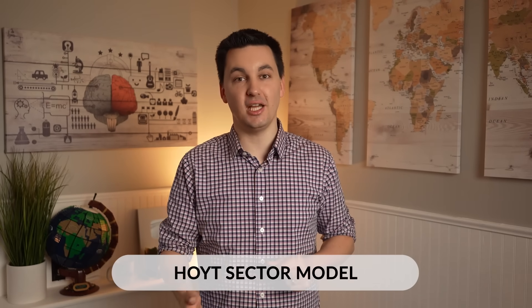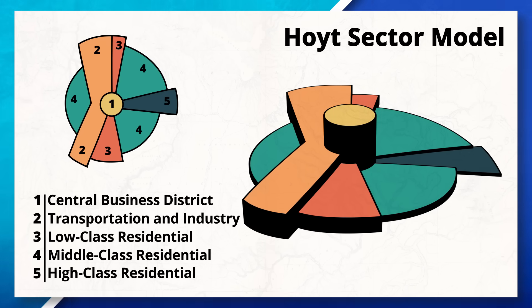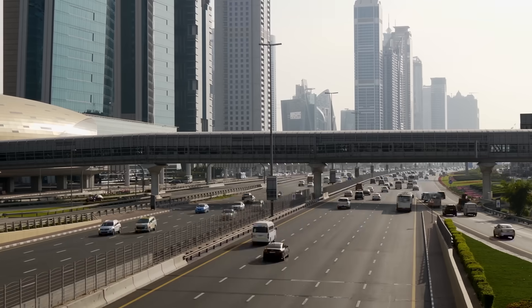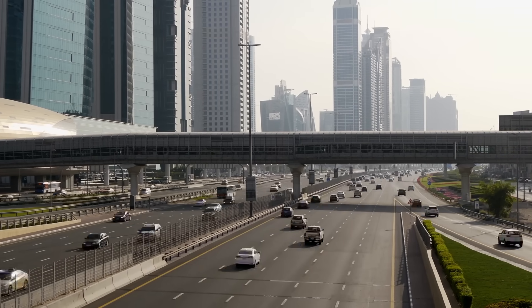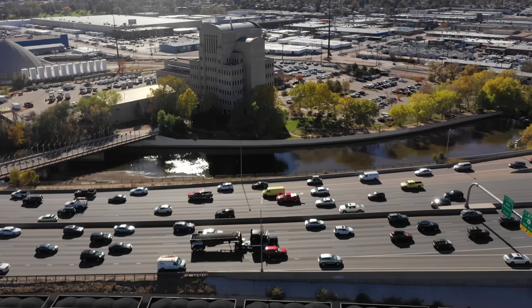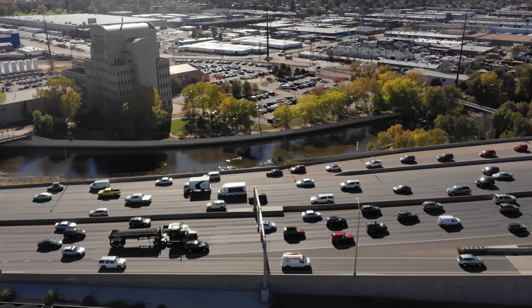The next model is the Hoyt Sector Model, which still uses a CBD as the center point. However, there is a bigger focus here on transportation. A city develops in sectors or wedges, with economic activities being centered around certain sections of the model, often based on economic or environmental factors. Different industries and businesses will locate near transportation routes such as highways or railroads. This allows customers to quickly access the businesses and also allows for different industries to quickly ship goods in and out of the area.